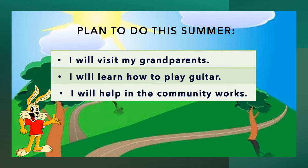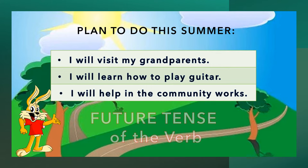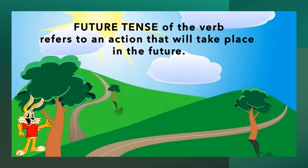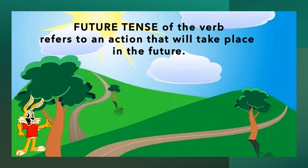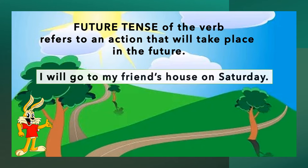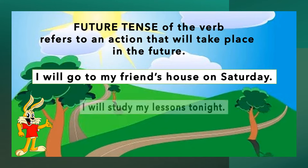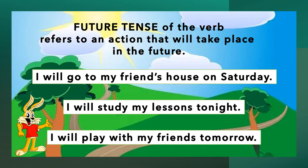These sentences are all in the future tense of the verb. What is the future tense of the verb? The future tense of the verb refers to an action that will take place in the future. For example: I will go to my friend's house on Saturday. I will study my lessons tonight. I will play with my friends tomorrow.